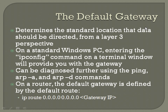First, let's talk about the default gateway. The default gateway determines the standard location that data should be directed from a Layer 3 perspective. Thinking about the default gateway on a PC first rather than a router — on a standard Windows PC, entering the ipconfig command on a terminal window will provide you with the gateway. You can do an ipconfig, see what IPs you're getting, see what gateway you're getting, and ping your gateway. That verifies if you get a good Layer 3 connection at least to the device you're directly connected to. It can be further diagnosed using ping commands as well as the ARP -a and ARP -d commands on a Windows PC.